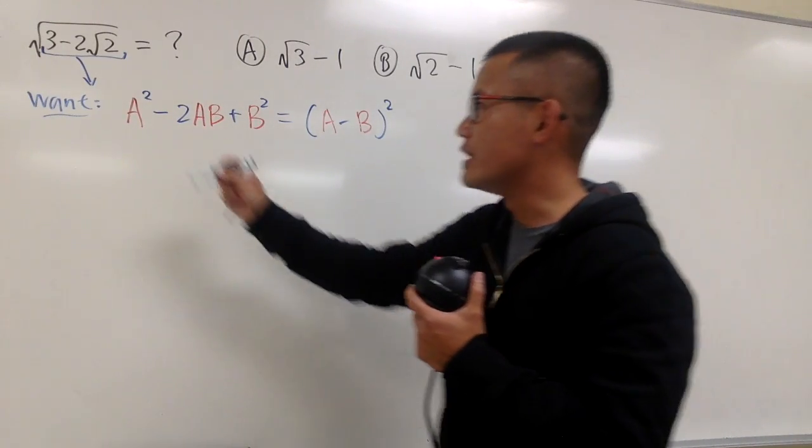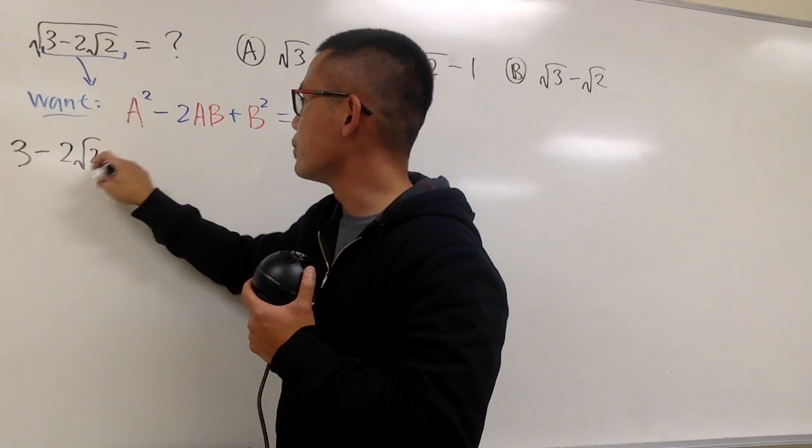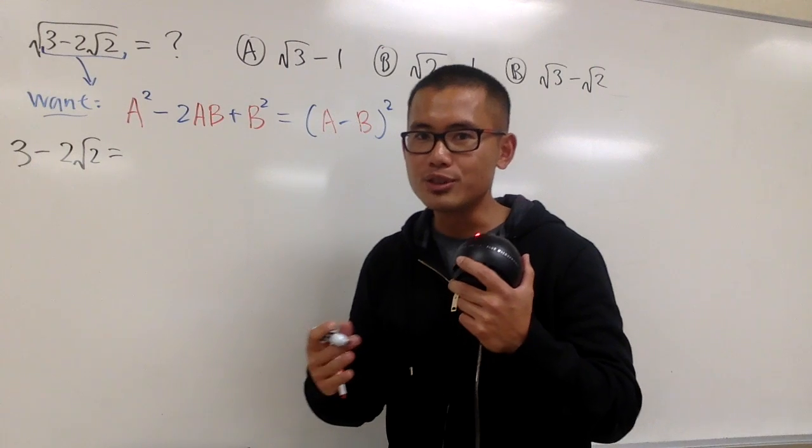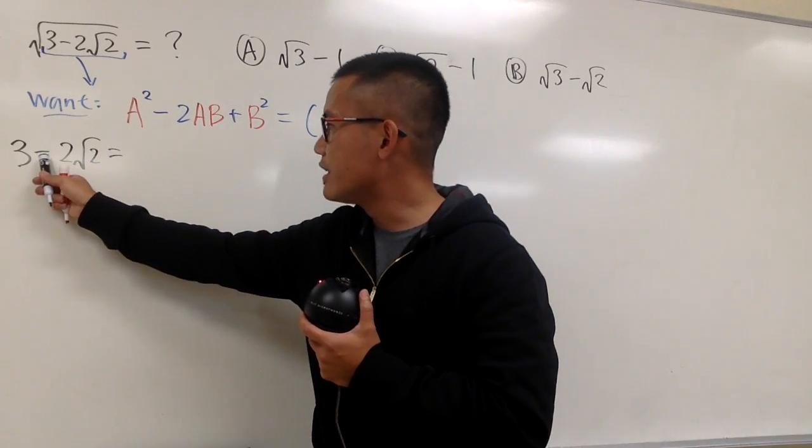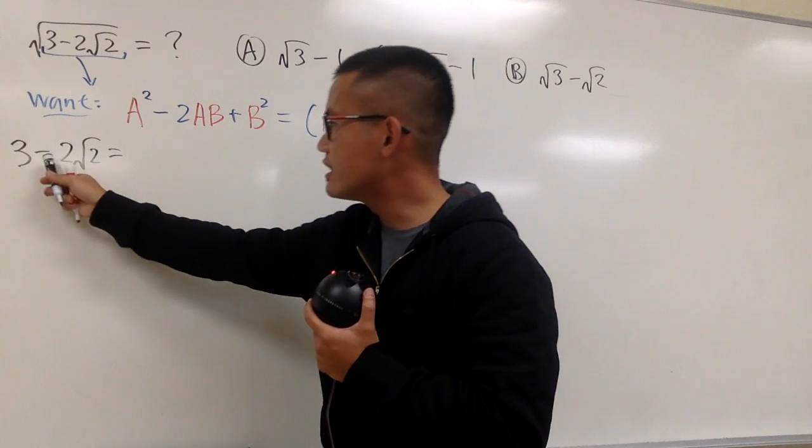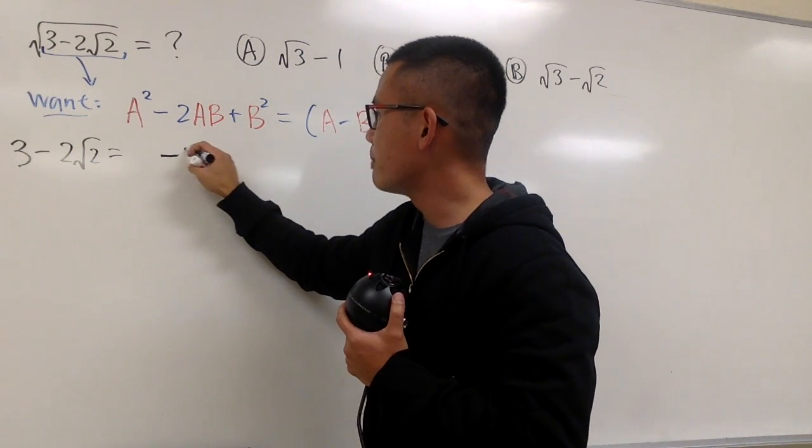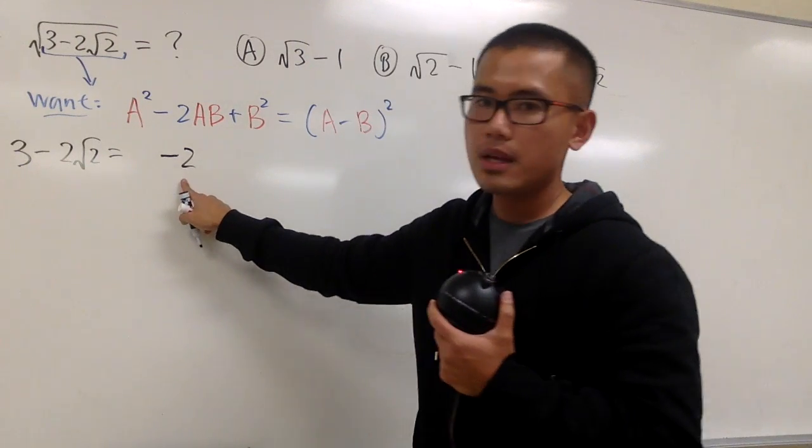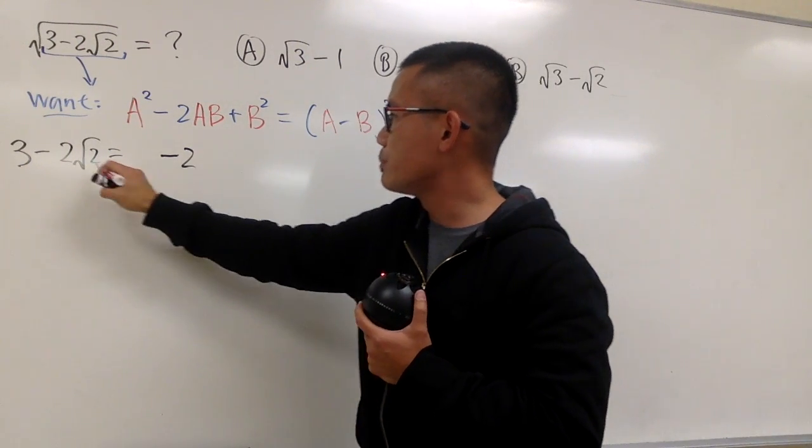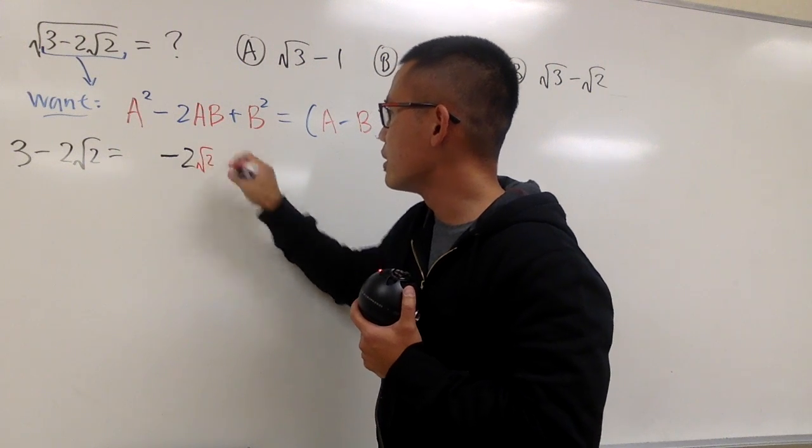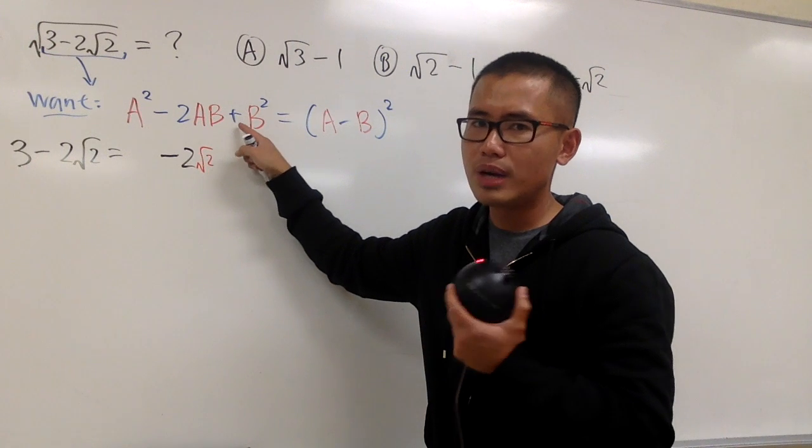And now, let me just write this down right here. We have this 3 right here, and then minus 2√2. And now we're just going to try to mix and match. First of all, I have this minus 2. This suggests me it's right here. So let me put this down right here. We have the minus 2 from here, and we have to attach the √2 after that. So let me just put down the √2 right here. And this √2 in red, it could be either the a or b.